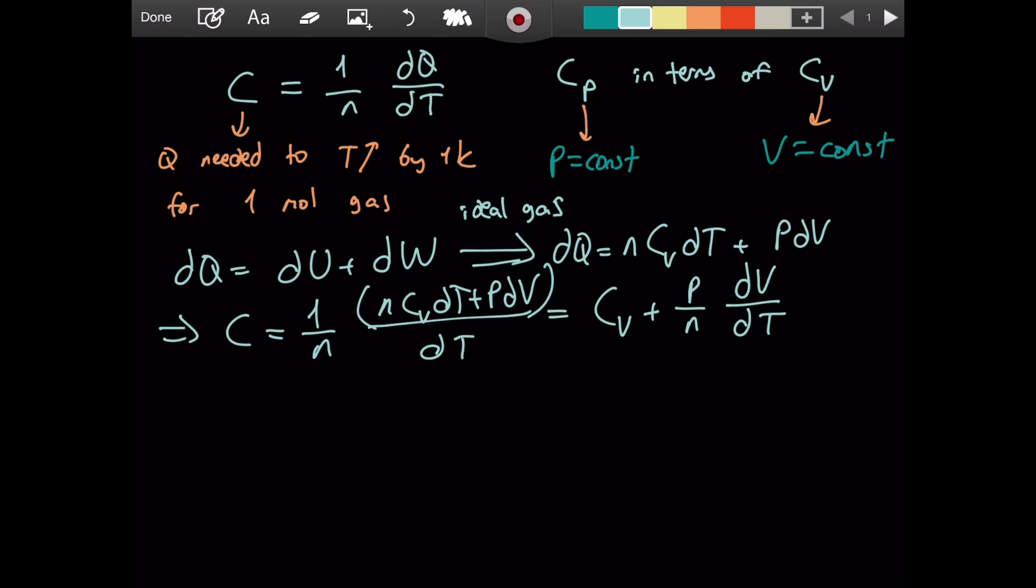Now, if I want to express Cp, I can say Cp is C evaluated under constant pressure, p constant. So, it is basically going to be Cv plus p over n dv by dt, dv by dt evaluated for a constant pressure. Nice. I hope so.